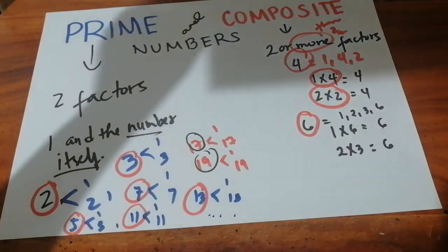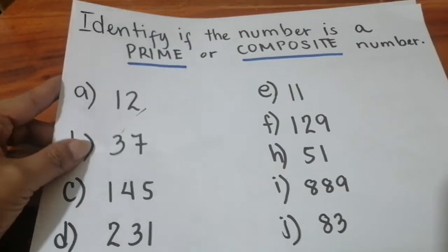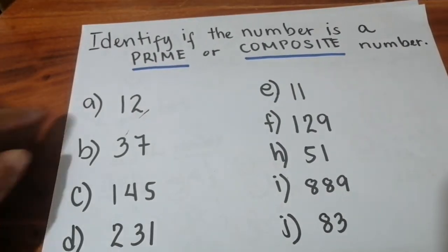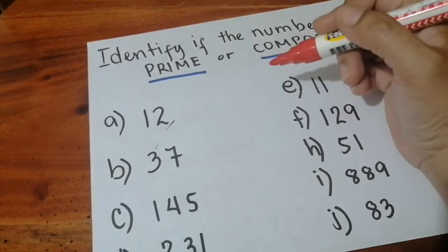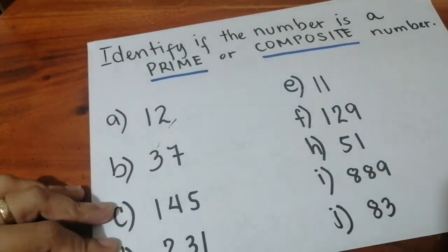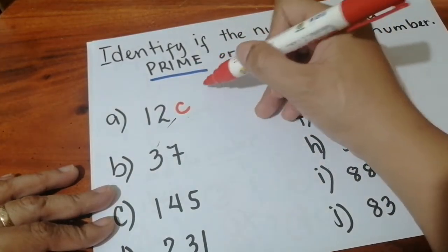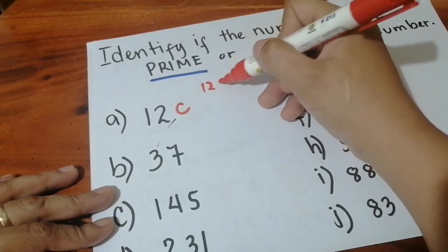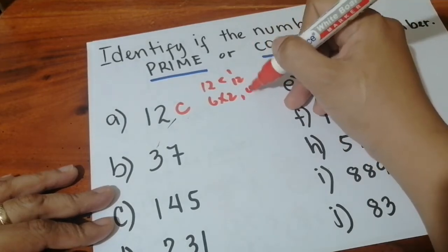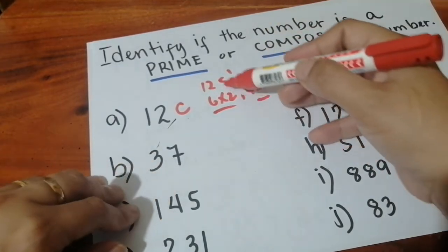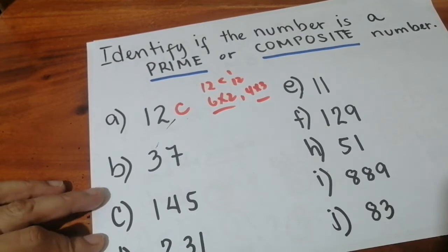Let us do more examples to better understand the difference between a prime number and a composite number. Here we have to identify if the number is prime or composite. Twelve is a composite number. Why? The factors of twelve include one and twelve, six times two, and four times three. Even if you only find one factor besides one times twelve, you already know that twelve is a composite number.